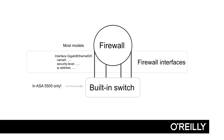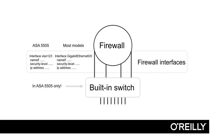However, in the Cisco ASA 5505, there is a built-in switch. That means there is an extra layer of interfaces. The physical interfaces in this box are the eight black lines we see on the bottom, below the built-in switch in this screen. In between the firewall and the physical interfaces, there is a switch. That means in the 5505, the firewall interfaces where we set name-if, security level, and IP address are not the physical interface names. Instead, we use VLAN names.